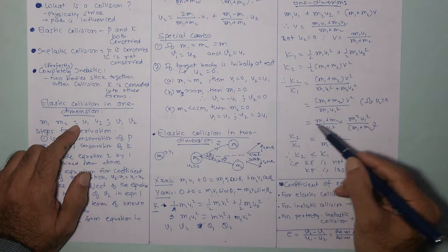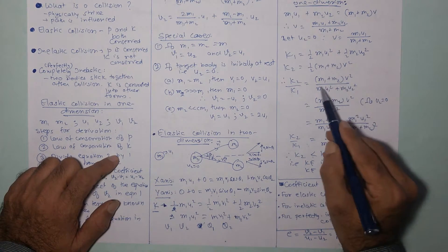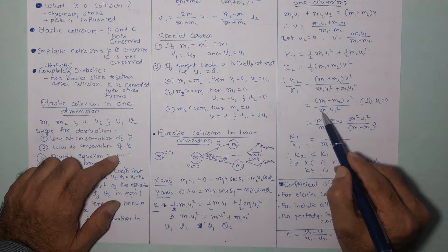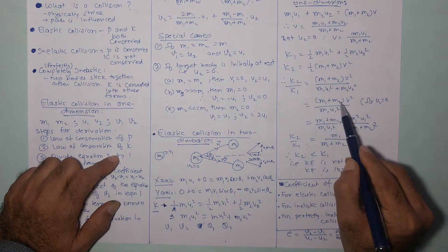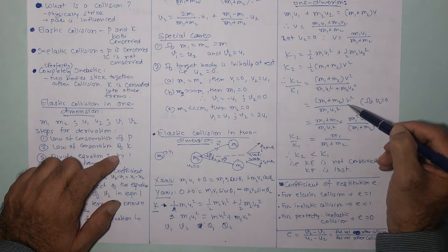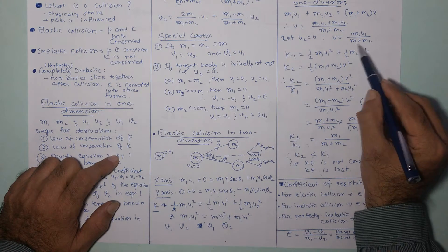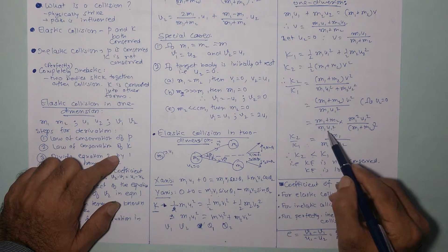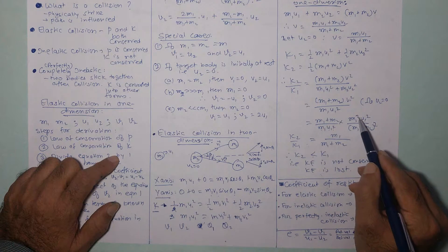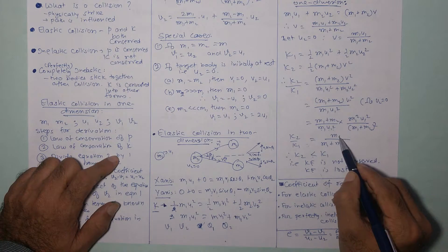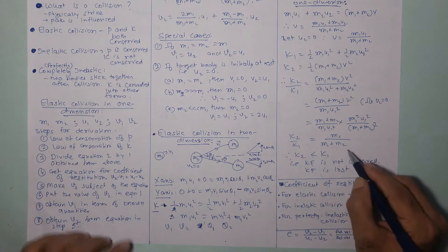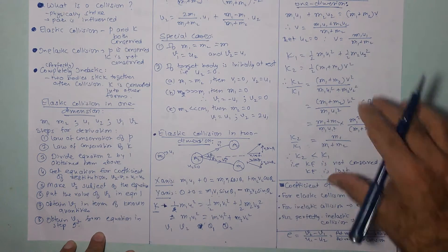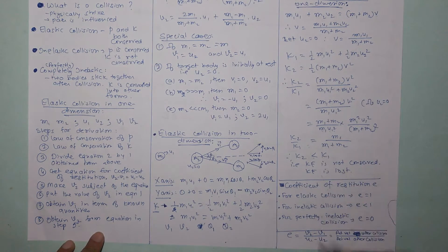Taking the ratio K2/K1 with U2 = 0 and substituting V, we get K2/K1 = M1 / (M1 + M2). Since the denominator is larger, K2 is less than K1 — confirming that kinetic energy is lost in a perfectly inelastic collision.